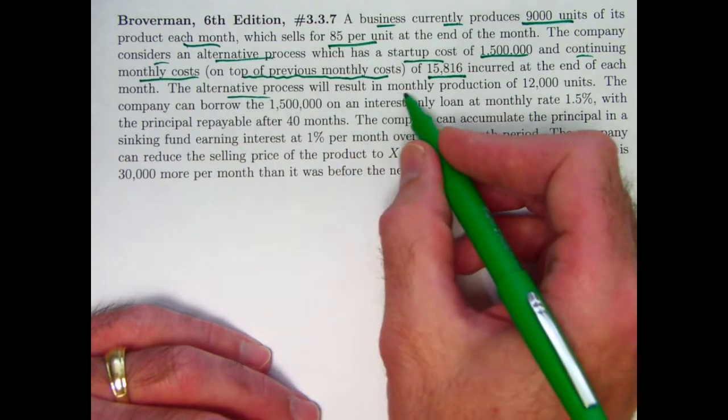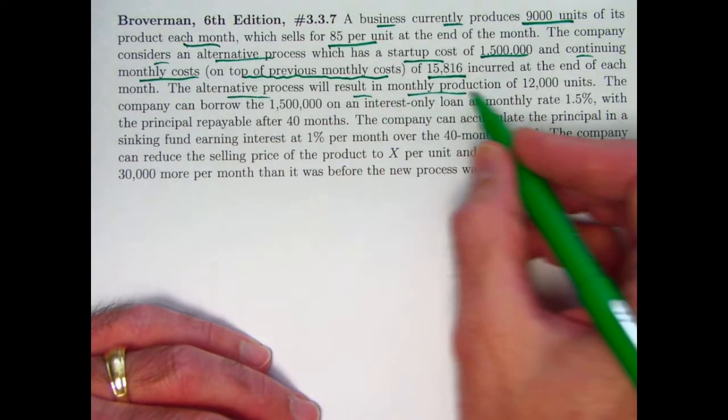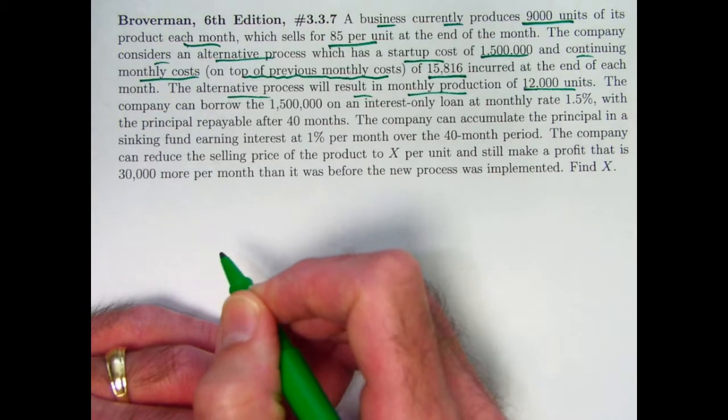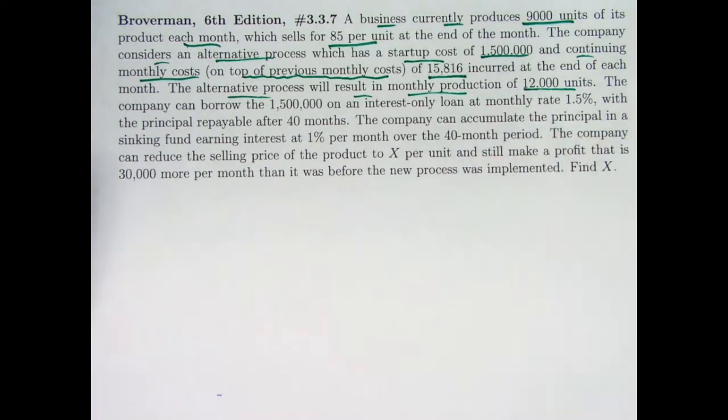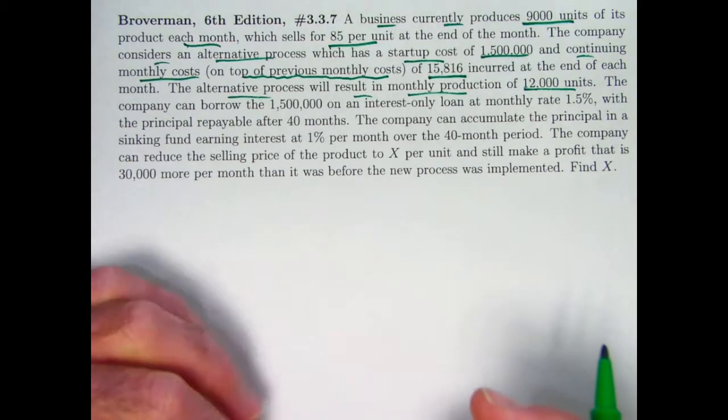The alternative process is going to result in monthly production that is higher than before, 12,000 units. Now, you'd have to be able to be sure that you can sell all 12,000 units. Probably only that way that's going to occur, at least based on current market conditions, is if you reduce your price, and actually that's going to happen.